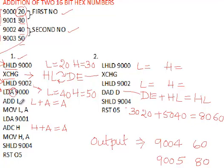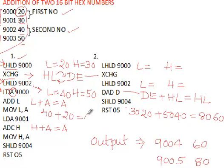We start the addition using ADD L. ADD L adds the value in L to the accumulator. L holds 40 from address 9002, so 20 plus 40 gives 60, and the result is stored in the accumulator. Then we use MOV L, A to move the lower byte result 60 from the accumulator to the L register. So L now holds the lower byte answer 60.